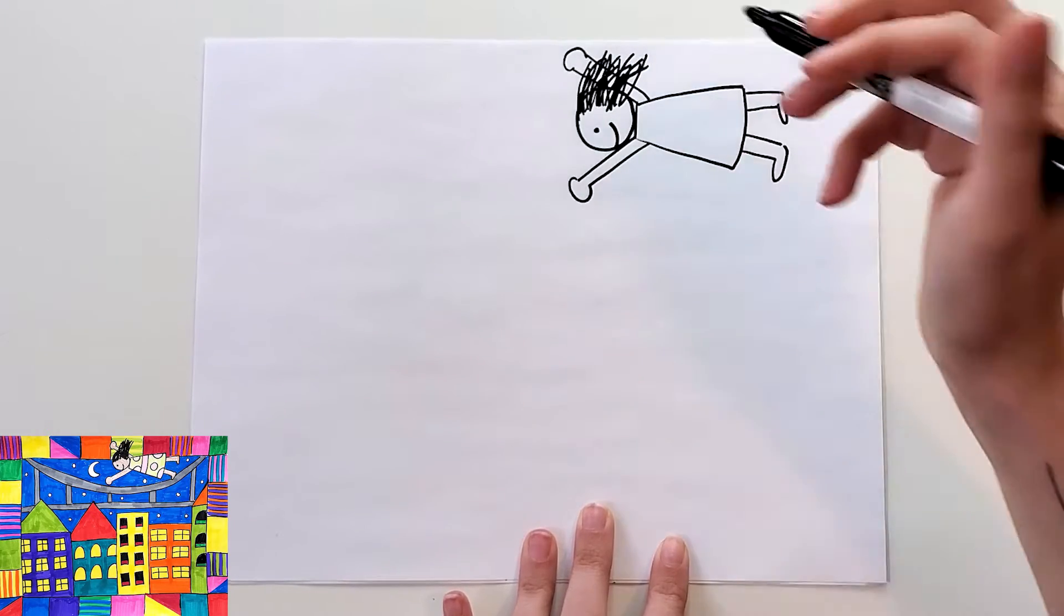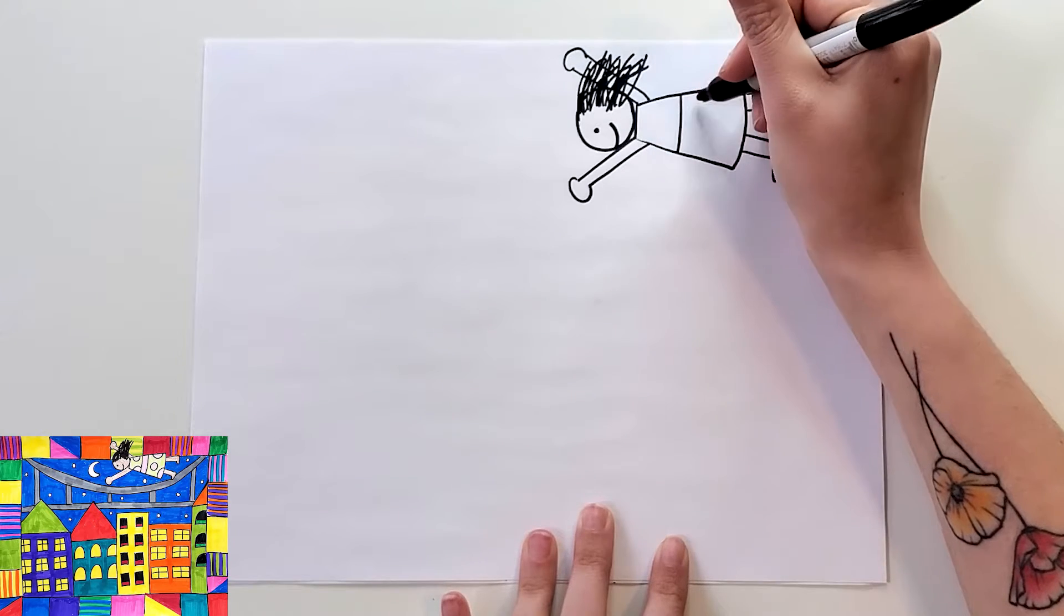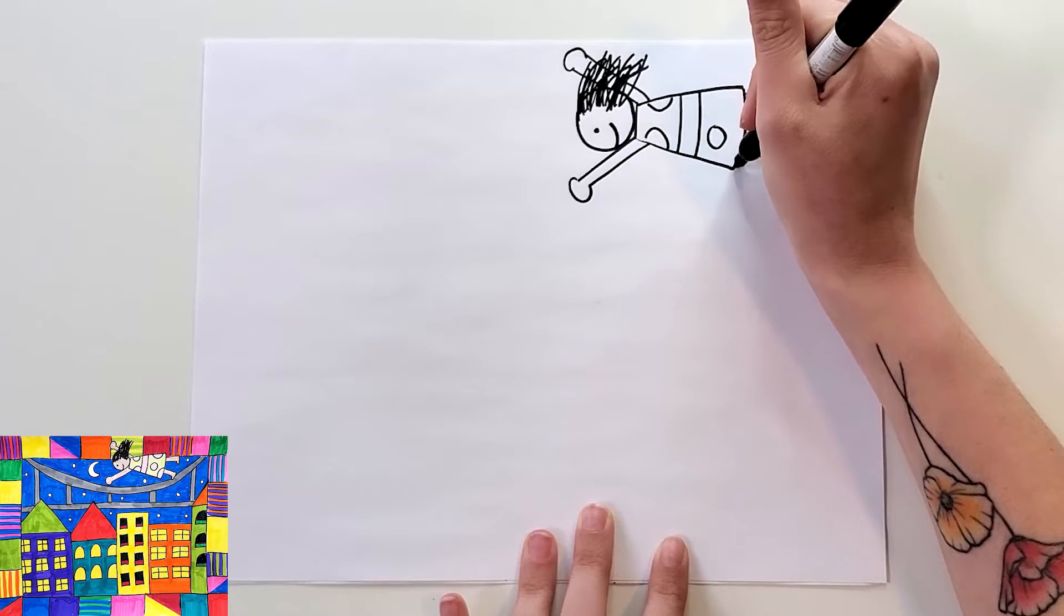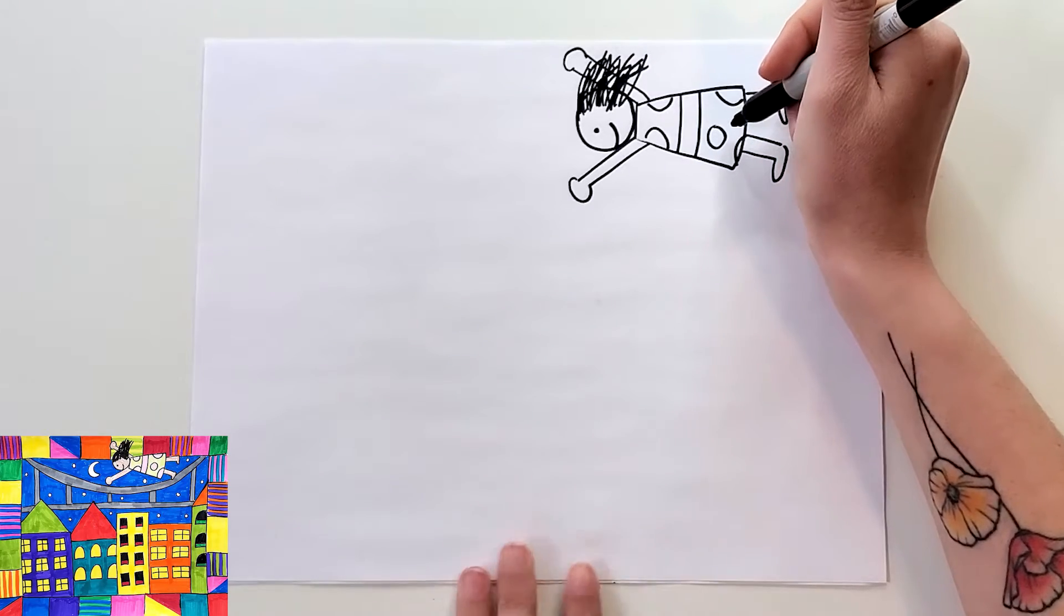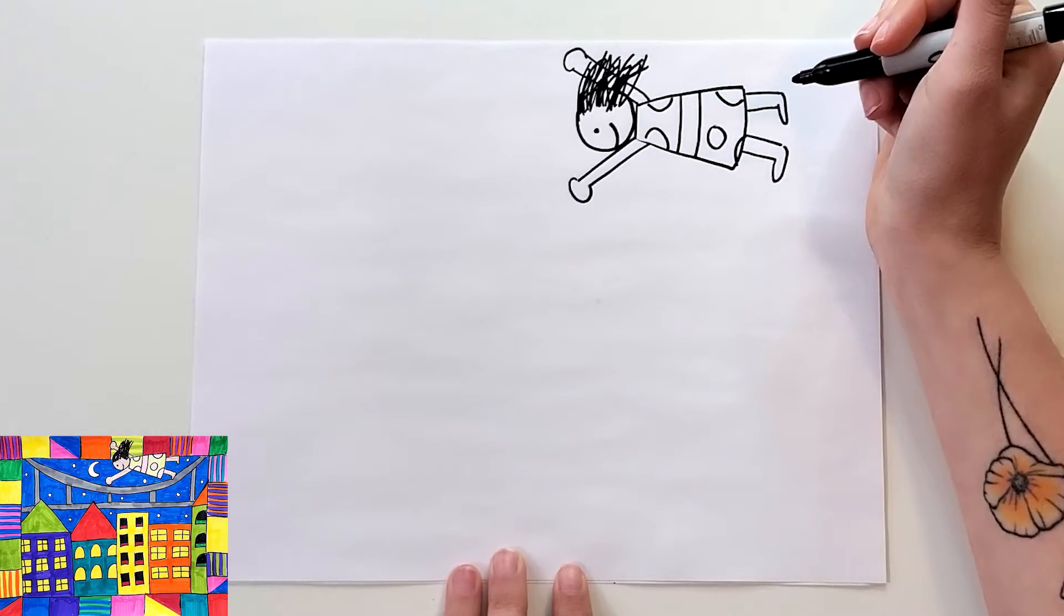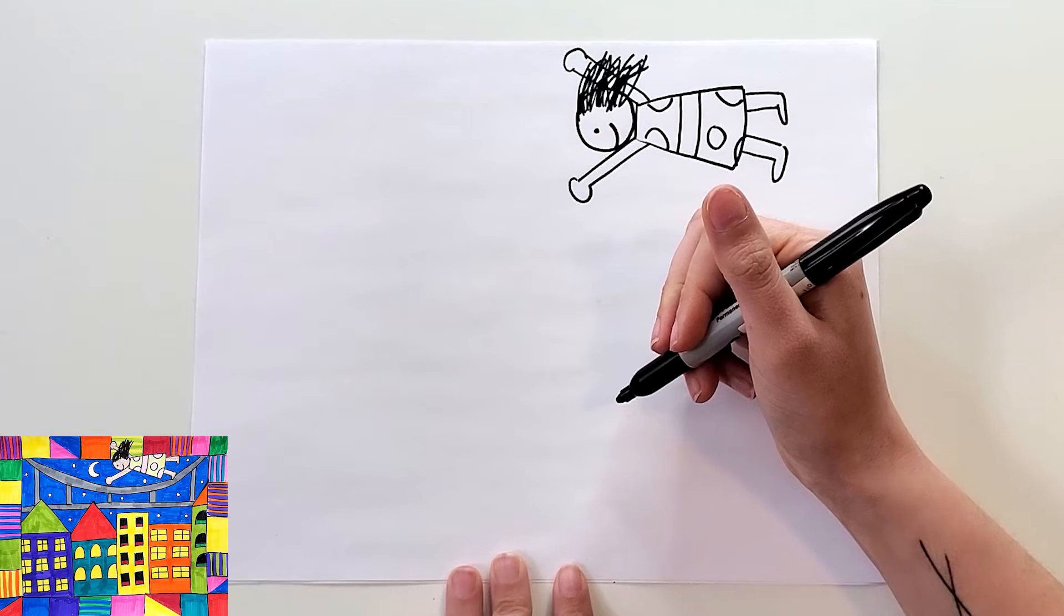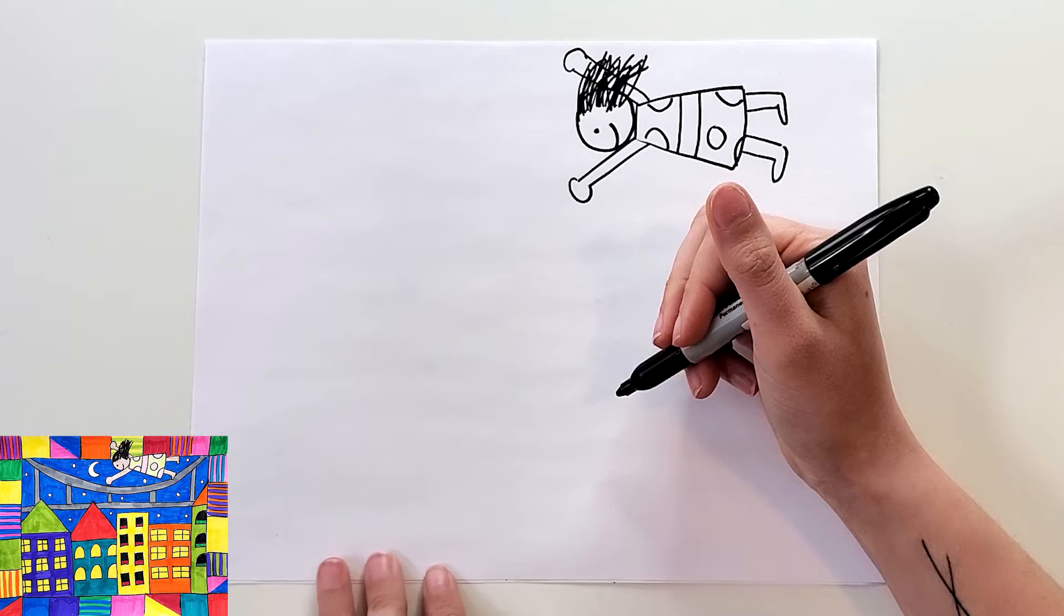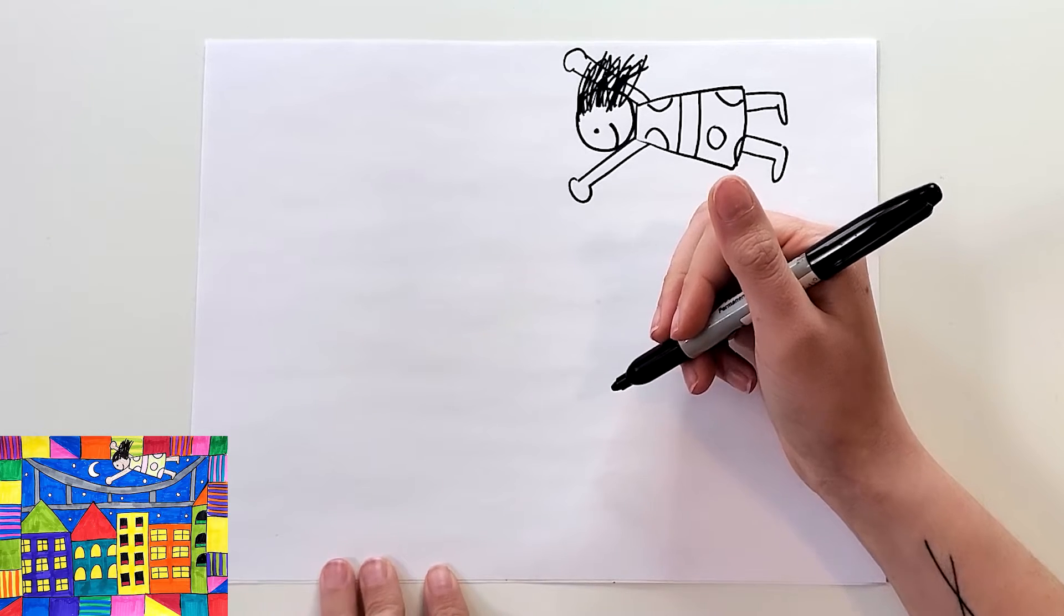If you want to add any patterns to the dress you could do that too. Alright now we're going to make our border on our picture. If you have a ruler it's a great idea to use one. I'm going to skip it for this one though because I don't mind if it's a little wavy.